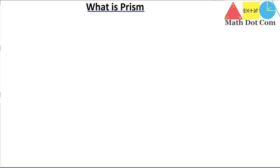Hello everyone. Today we are going to discuss the concept of prism. Whenever we come across the word prism, the concept that comes to mind is a triangular 3D shape. But this is not entirely correct — prism is not only a 3D triangular shape. Today I will clear your concept about what other shapes can also be a prism, other than the 3D triangular shape.